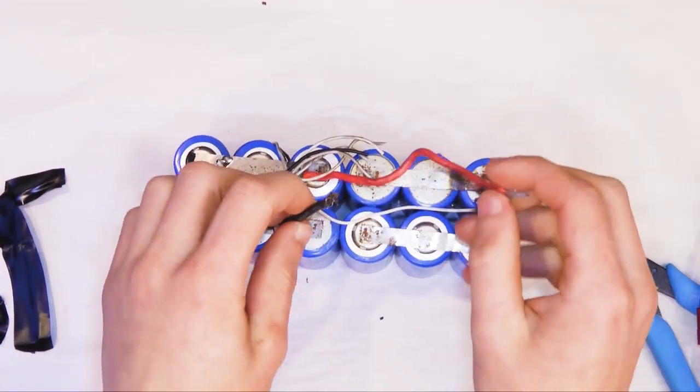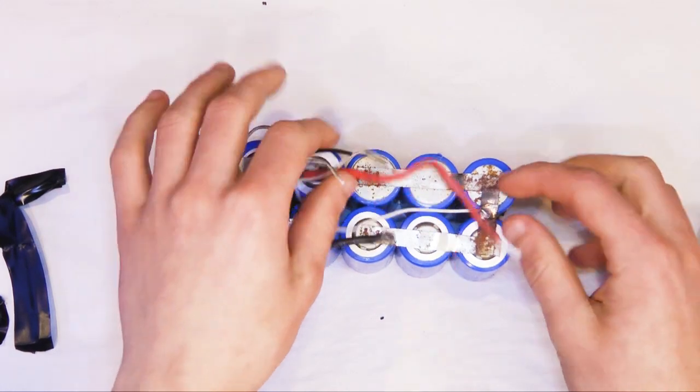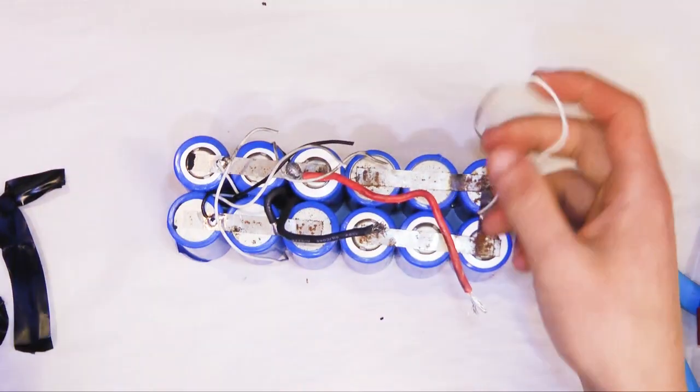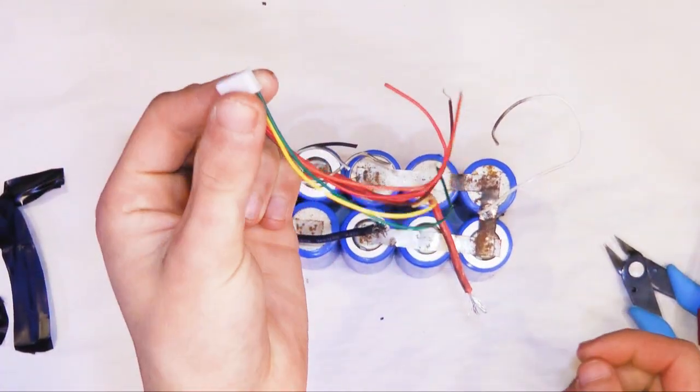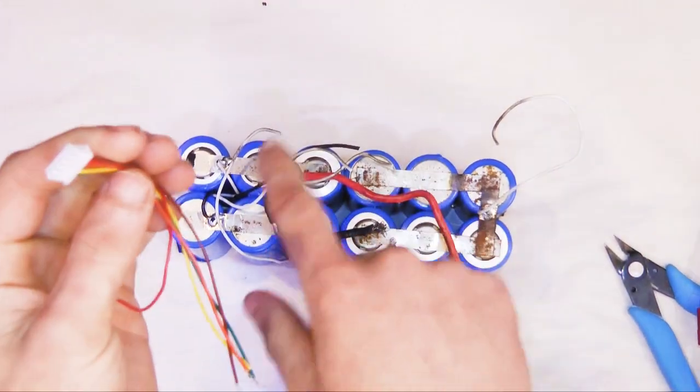So, here we've got all the balance wires and the two main wires. First thing we're going to do is find out where all these balance wires go, and we're going to start connecting the balance wires on this lead right here to all the ones on here.